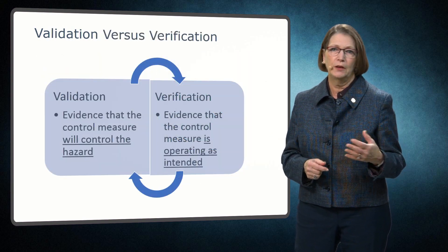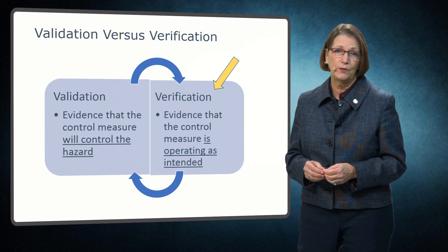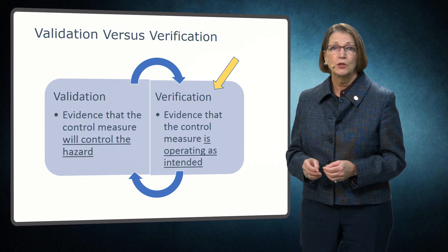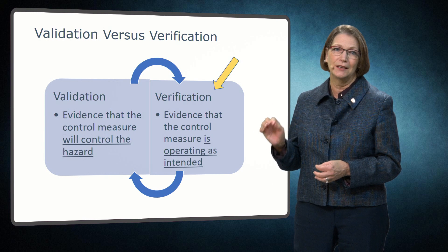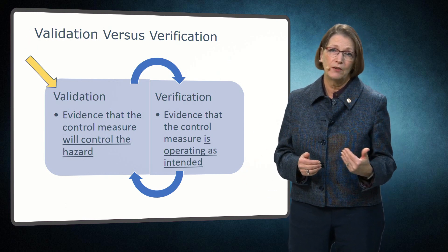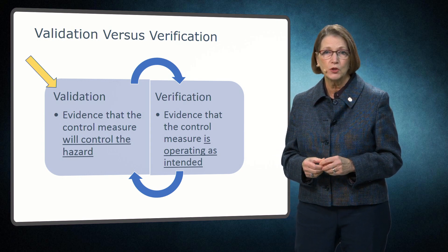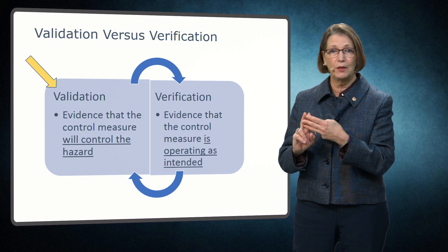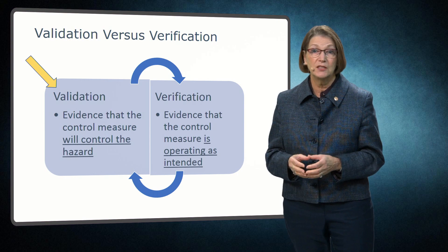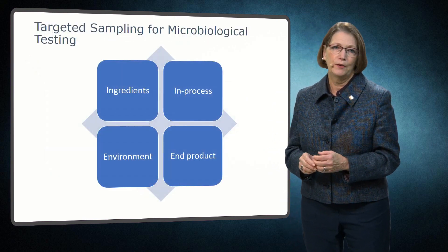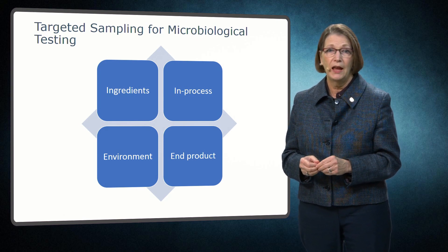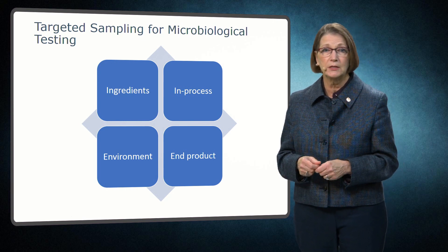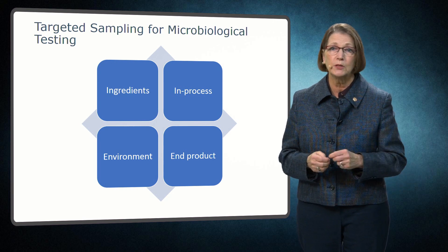There is an obvious link between verification and validation. Codex Alimentarius guidelines define verification as the application of methods, procedures, tests, and other evaluations in addition to monitoring to determine whether a control measure is or has been operating as intended. While the process validation study provides evidence that the process will control an identified hazard, it usually assumes that good hygienic practices are implemented, equipment is capable of delivering the process, and employees are trained to perform their assigned tasks properly. Verification is needed to provide evidence that these conditions are met. Many verification procedures do not involve microbiological sampling and testing; however, it is important to recognize that such testing may be useful for some products. This may include targeted sampling and testing of ingredients, in-process materials, environmental samples, and finished products.